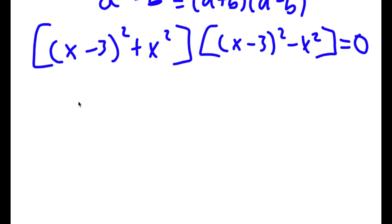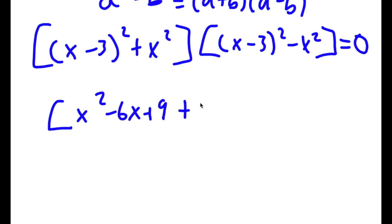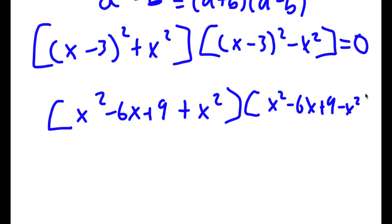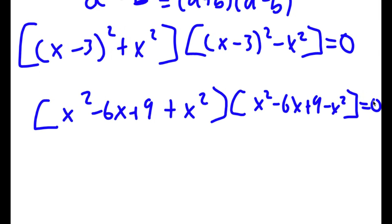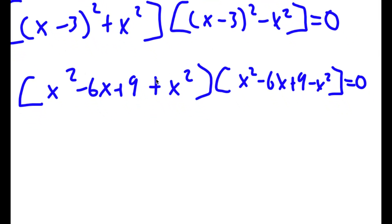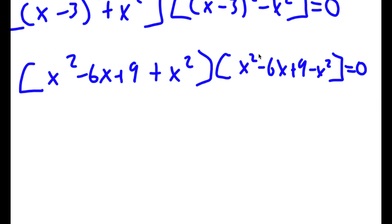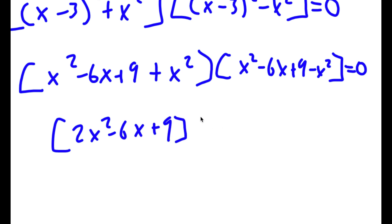Now this is the same thing as (x squared minus 6x plus 9 plus x squared) times (x squared minus 6x plus 9 minus x squared) is equal to 0, because I just expanded (x minus 3) squared. So now I'm going to simplify this to (2x squared minus 6x plus 9) times (negative 6x plus 9) is equal to 0.